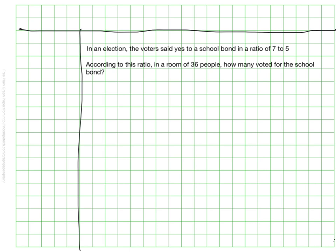In an election there was a vote for a school bond and the ratio of voters who said yes to those who said no was seven to five. So according to this ratio if we had a room of 36 people could we figure out how many voted approximately for the school bond?